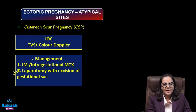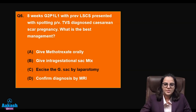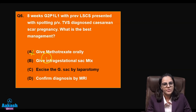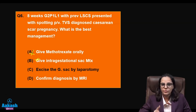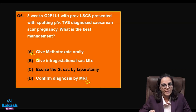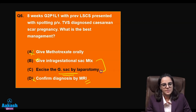Best management is laparotomy with excision of the gestational sac. If cardiac activity is present, intramuscular or intragestational methotrexate can also be given. Going through the options: oral methotrexate — no; intragestational sac methotrexate — yes, it can be given; confirm by MRI — TVS is the investigation of choice, followed by color Doppler; MRI is only used if both are inconclusive. Excision of the gestational sac by laparotomy is preferred.